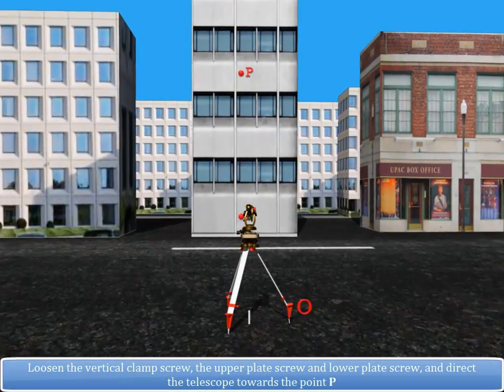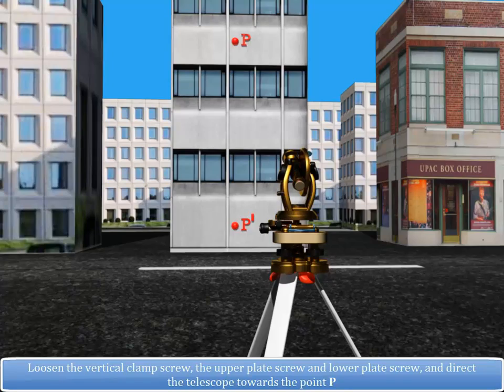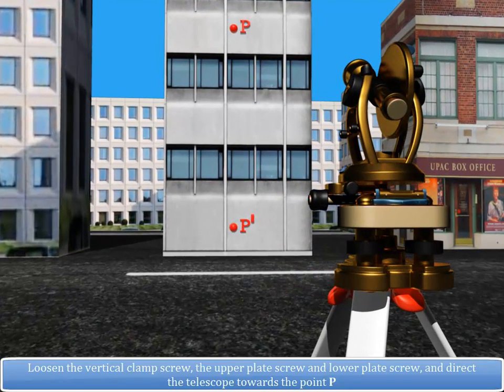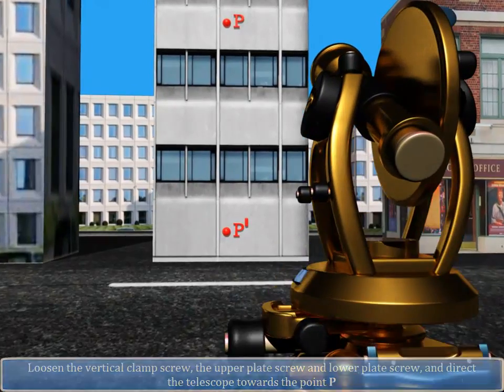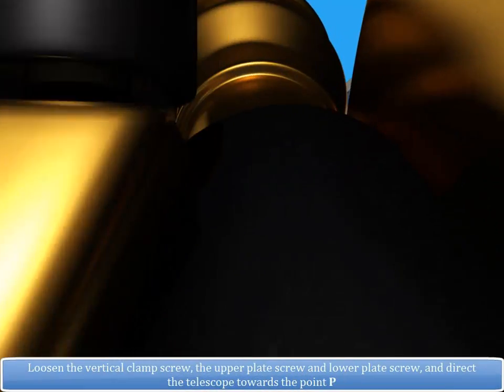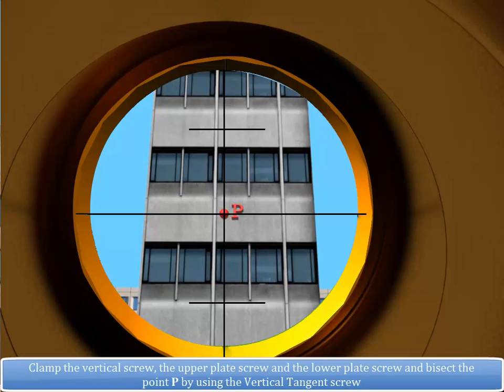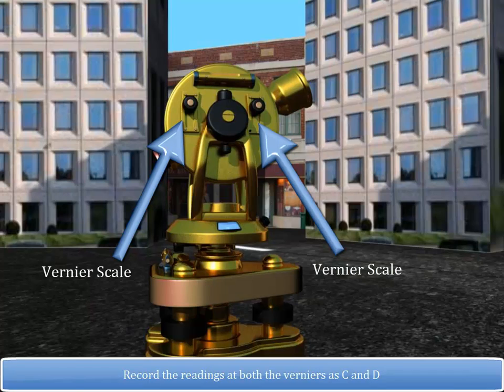Loosen the vertical clamp screw, the upper plate screw and lower plate screw and direct the telescope towards the point P. Clamp the vertical screw, the upper plate screw and the lower plate screw and bisect the point P by using the vertical tangent screw. Record the readings of both the verniers as C and D.